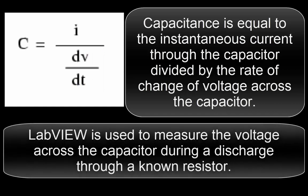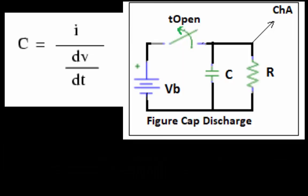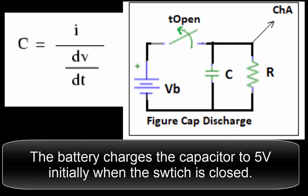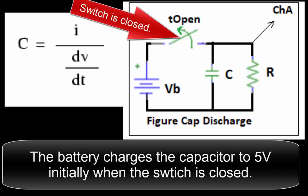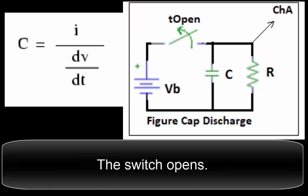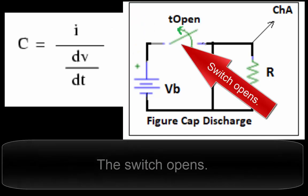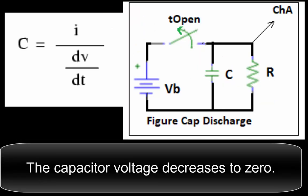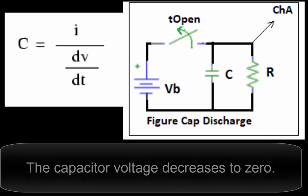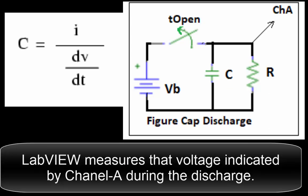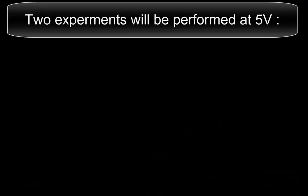LabVIEW is used to measure the voltage across the capacitor during a discharge through a known resistor. The battery charges the capacitor to 5 volts initially. Then the switch opens. The capacitor voltage decreases to zero. LabVIEW measures that voltage indicated by channel A during the discharge.